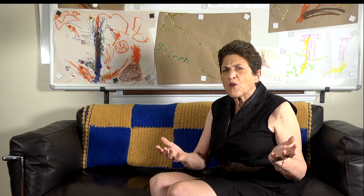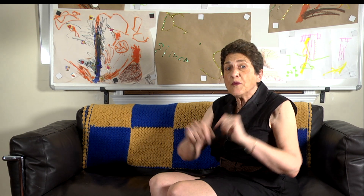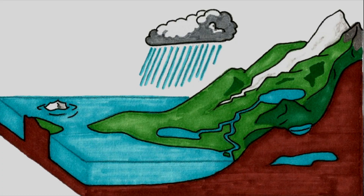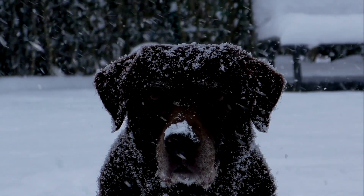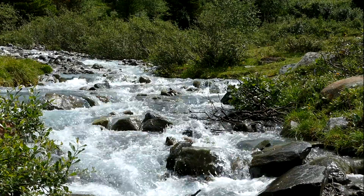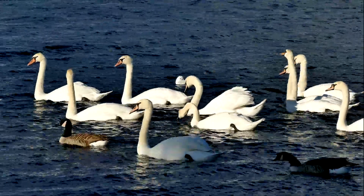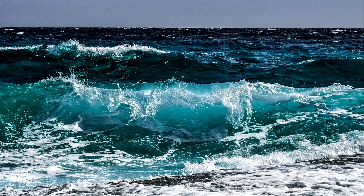Evaporated water from the oceans rises and accumulates in the Earth's atmosphere. Once the atmosphere is saturated, the vapor becomes rain or snow and falls back to Earth, where it settles or finds itself in rivers, lakes, or back in the ocean.